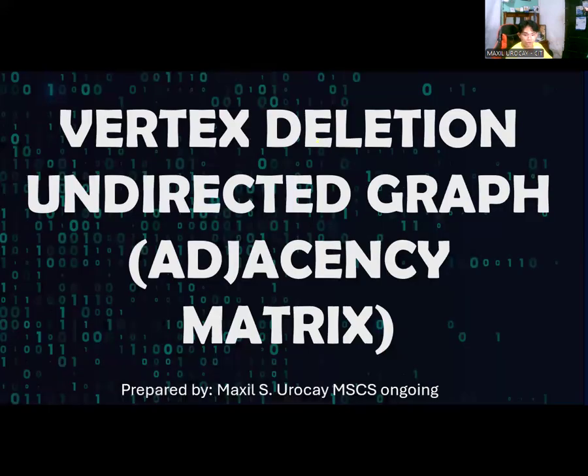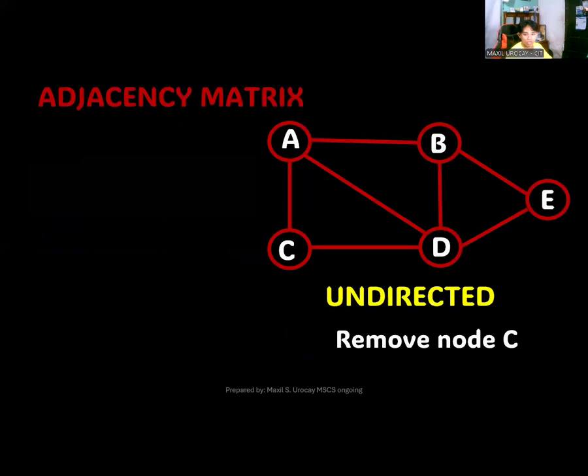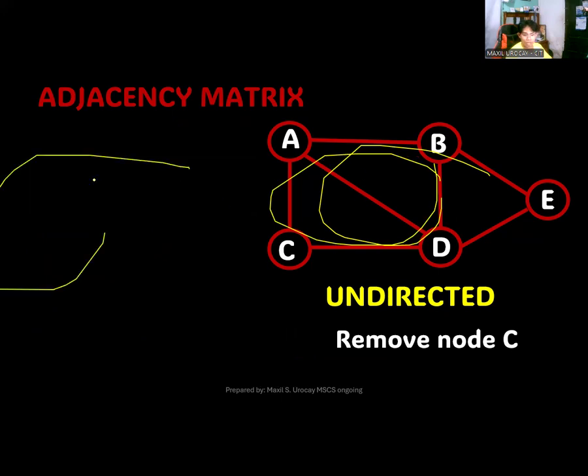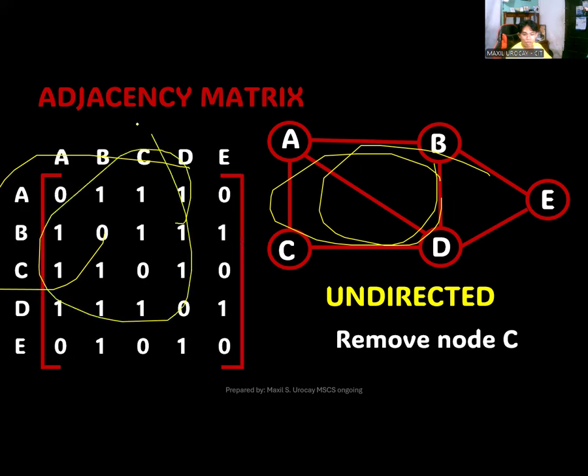Let's try to figure it out. How does it work? For vertex deletion for undirected graph using the adjacency matrix, this is how it works. Suppose you have a graph here. You can get the adjacency matrix, and you can check the adjacency matrix in the previous video. This will be the representation of the adjacency matrix for that one.